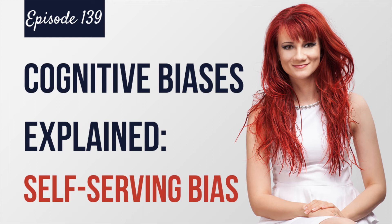What does this cognitive distortion actually mean? The self-serving bias is all about attributing positive events to your own character, but attributing negative events to external factors. For example, you may say, 'I got a good grade because I studied hard,' attributing success to your own character. Or you may say, 'I got a bad grade because the teacher hated me,' attributing your bad grade to external factors such as your relationship with your teacher.